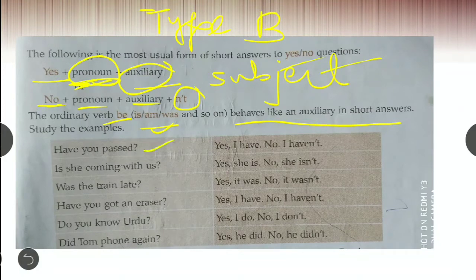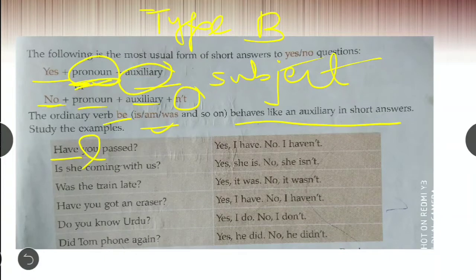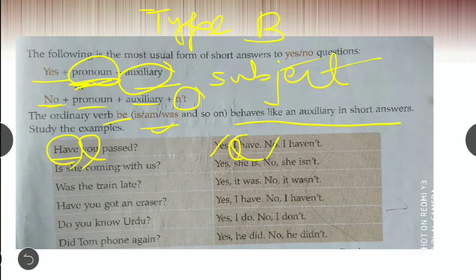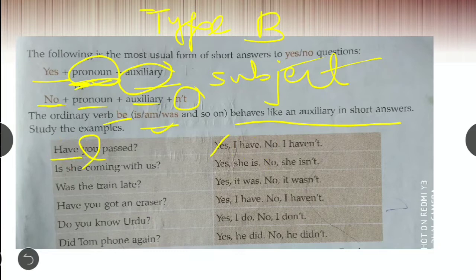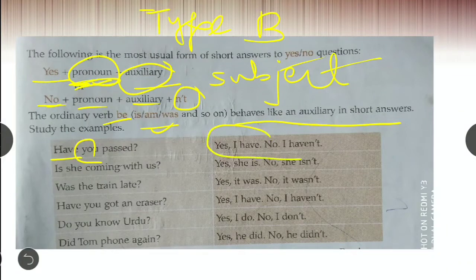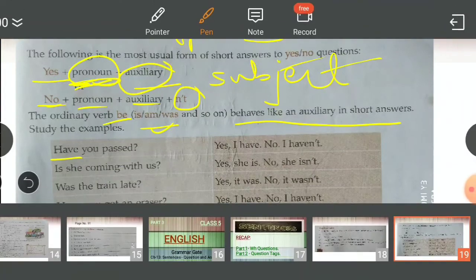Let us see how you can give short answers. Have you passed? It may be about a test. So, yes, I have. No, I have not. See the structure over here, students. Have is the auxiliary verb, you is the pronoun. So what is our formula? Yes or no, then pronoun, I came over here, and then auxiliary verb will come next. You will not use 'you' over here because it's a question asked to you. Don't make it as a question only. Yes, you have. No, you have not. That is wrong.